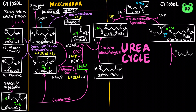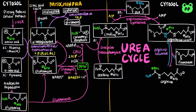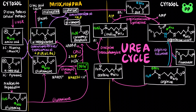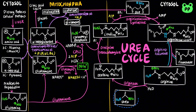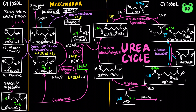Argininosuccinate is then cleaved by the enzyme argininosuccinase to form free arginine and fumarate. This is the only reversible step in the urea cycle. The last step involves the cytosolic enzyme arginase, which cleaves arginine to yield urea and ornithine. The urea is transported to the kidney and excreted as urine, while ornithine enters the mitochondria to begin a new round of the urea cycle.